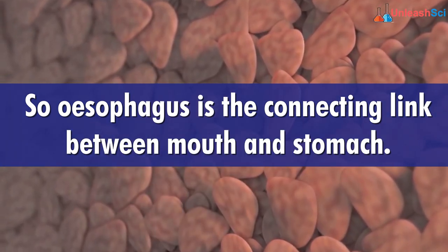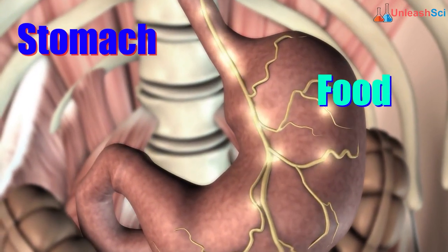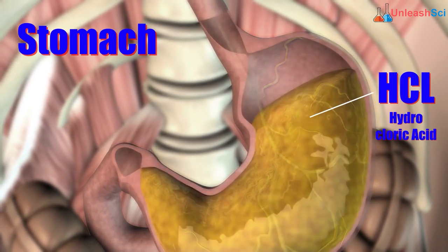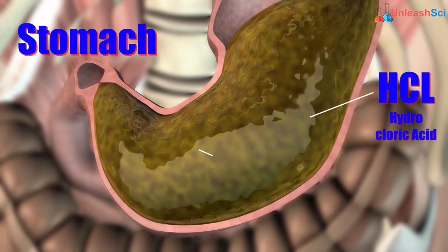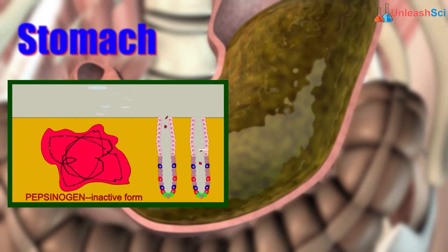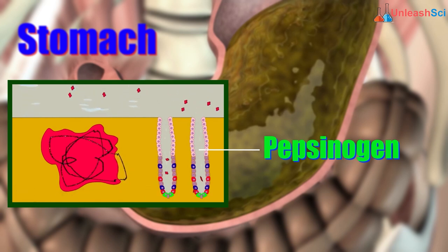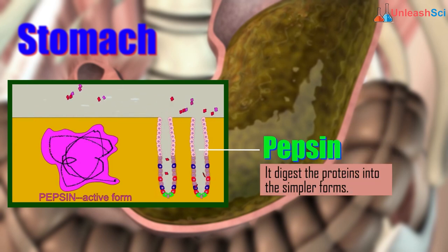The stomach is a J-shaped organ and a temporary storage house for our food. In the stomach, there is an acidic environment because of the presence of hydrochloric acid. The stomach secretes a juice termed as gastric juice. It contains a very important enzyme called pepsinogen. This enzyme is inactive, but with the help of the acid, the inactive enzyme is converted into its active form — pepsin — and it digests proteins into simpler forms.